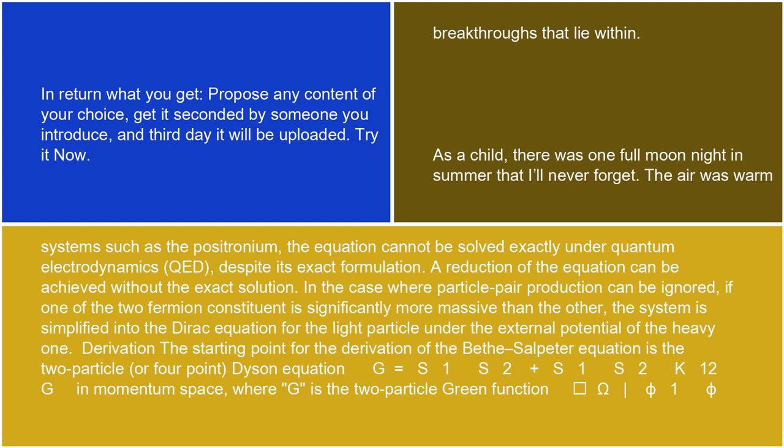A reduction of the equation can be achieved without the exact solution. In the case where particle pair production can be ignored, if one of the two fermion constituents is significantly more massive than the other, the system is simplified into the Dirac equation for the light particle under the external potential of the heavy one.